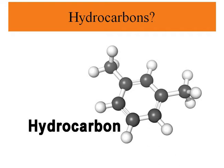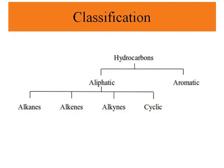First of all, let's see what we mean when we talk about hydrocarbons. A hydrocarbon is an organic compound consisting of carbon and hydrogen only. Hydrocarbons are the simplest form of organic compounds, and they can be in the form of straight chain, branch chain, or cyclic molecules.